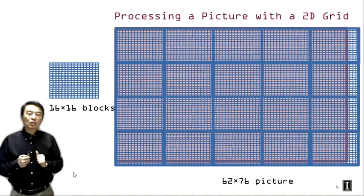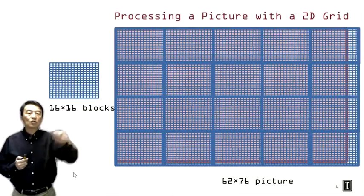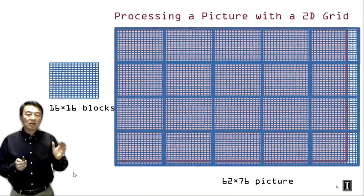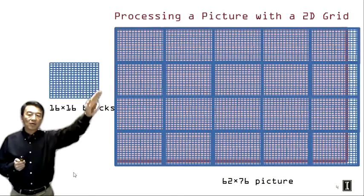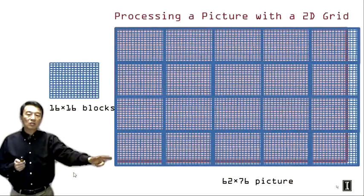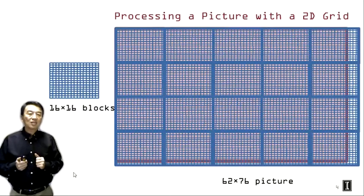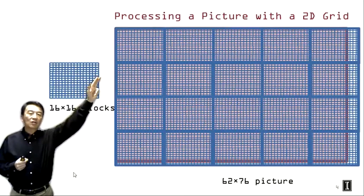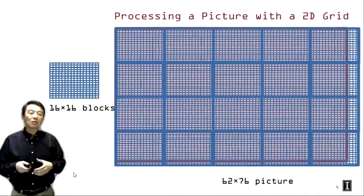Just like in the vector addition example, we need to make sure that we have enough threads in both the y dimension and x dimension to process all the pixels. We're going to need to launch four thread blocks in the y dimension to cover all 62 pixels. When we launch four thread blocks, we have 64 threads, so all 62 pixels are covered and we will have two extra threads that should not be doing anything. And in the x dimension, we're going to need to launch five thread blocks, giving us 80 threads to cover all 76 pixels, with four threads that should not do anything.